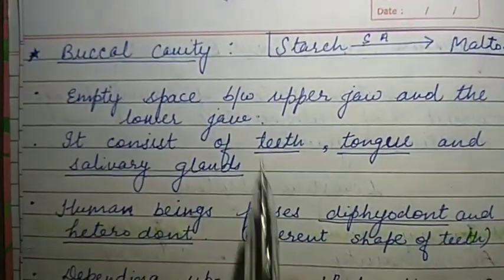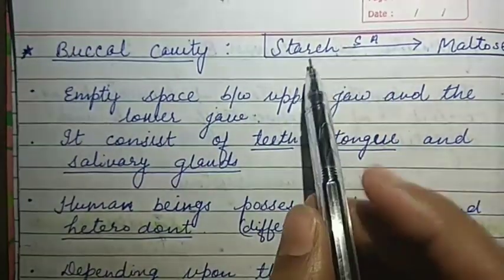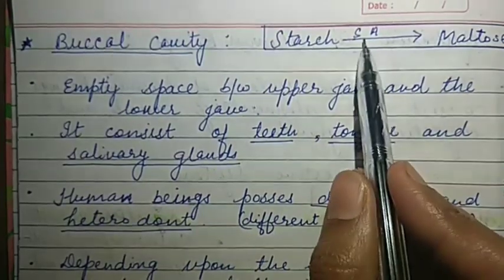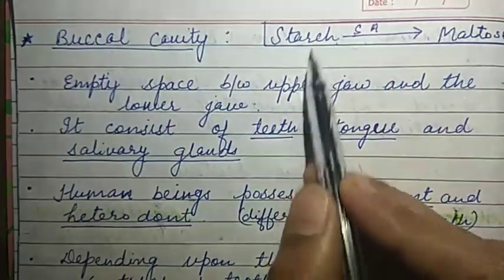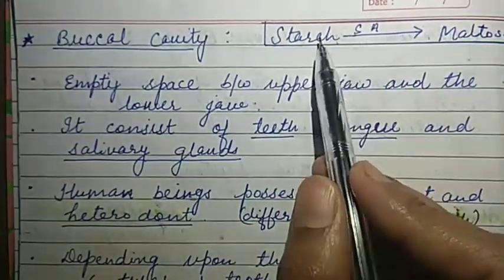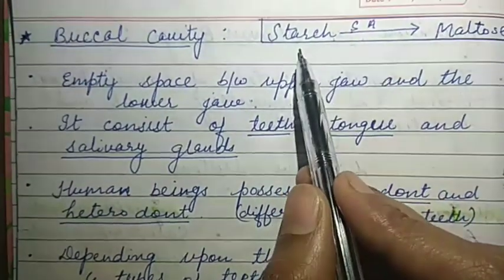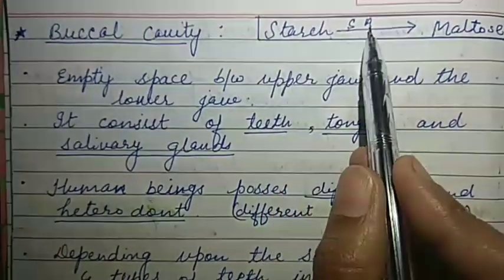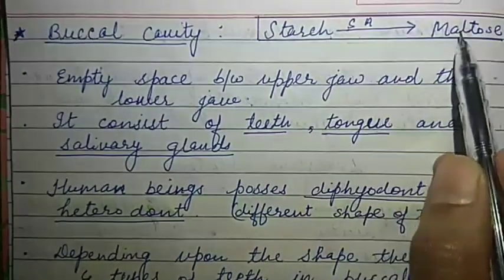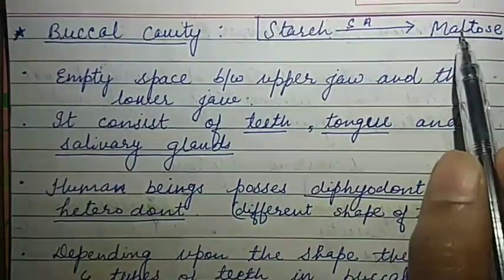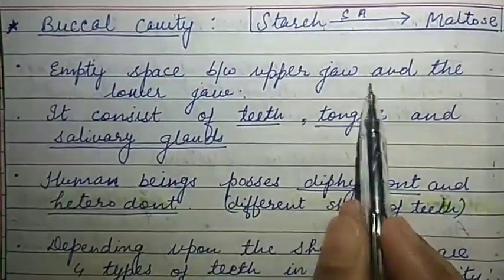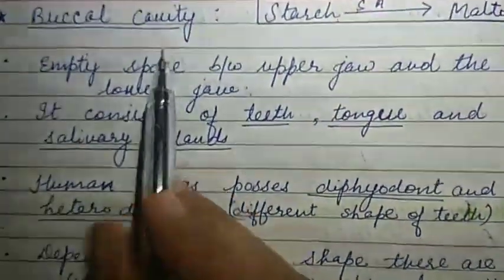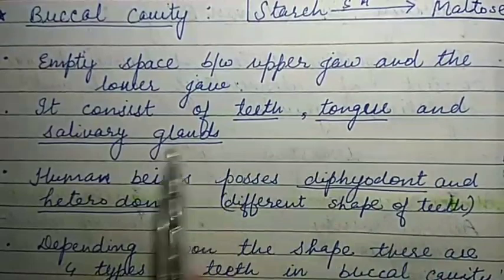In the buccal cavity, starch breaks down into maltose in the presence of salivary amylase. Starch is a polysaccharide — food is stored as starch in plant bodies and as glycogen in animal bodies. When salivary amylase acts on starch, it breaks down into the disaccharide maltose. The buccal cavity is the empty space between the upper jaw and lower jaw. It consists of teeth, tongue, and salivary glands.